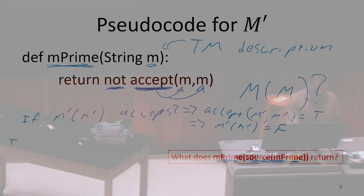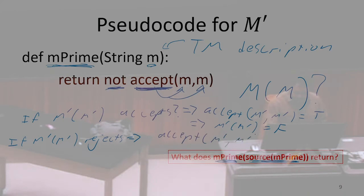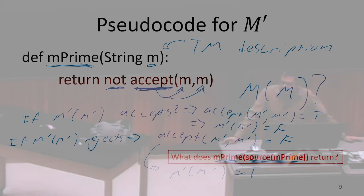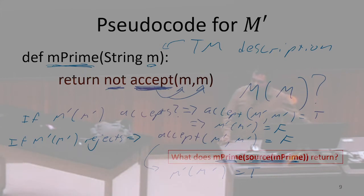Now we have to consider the opposite case. If, on the other hand, m′ on m′ rejects, then that's going to imply that accept(m′, m′) equals false, which is going to imply that m′ on m′ equals true, which means it should accept. So we have a contradiction either way. The only thing that could have gone wrong with our assumptions was that we had this function accept — that we could have written this function accept.